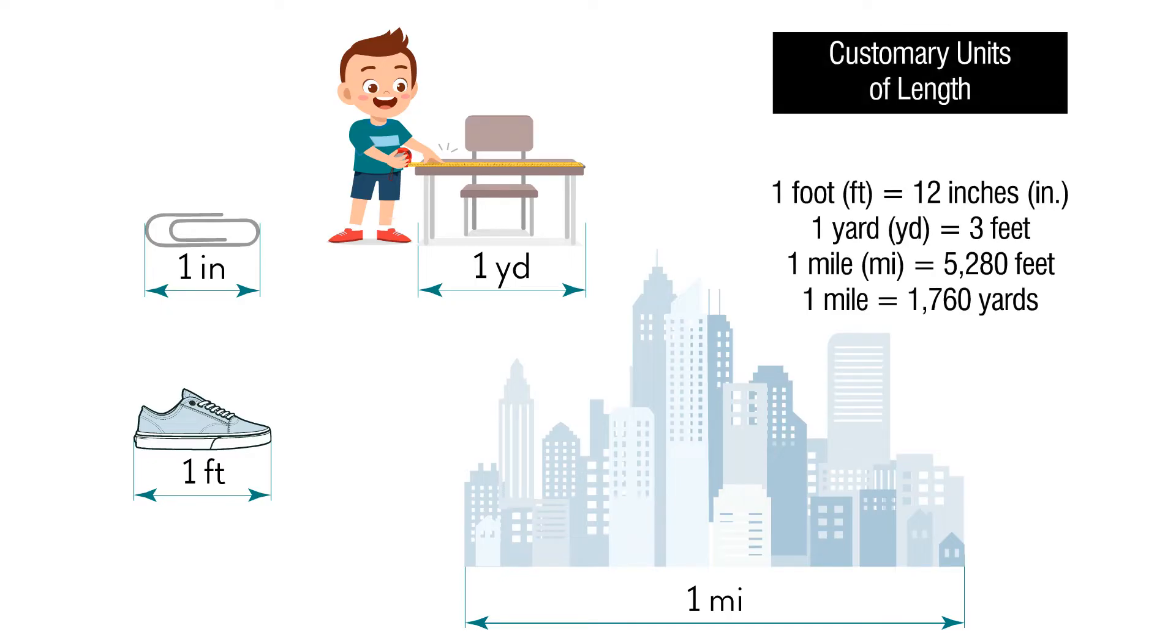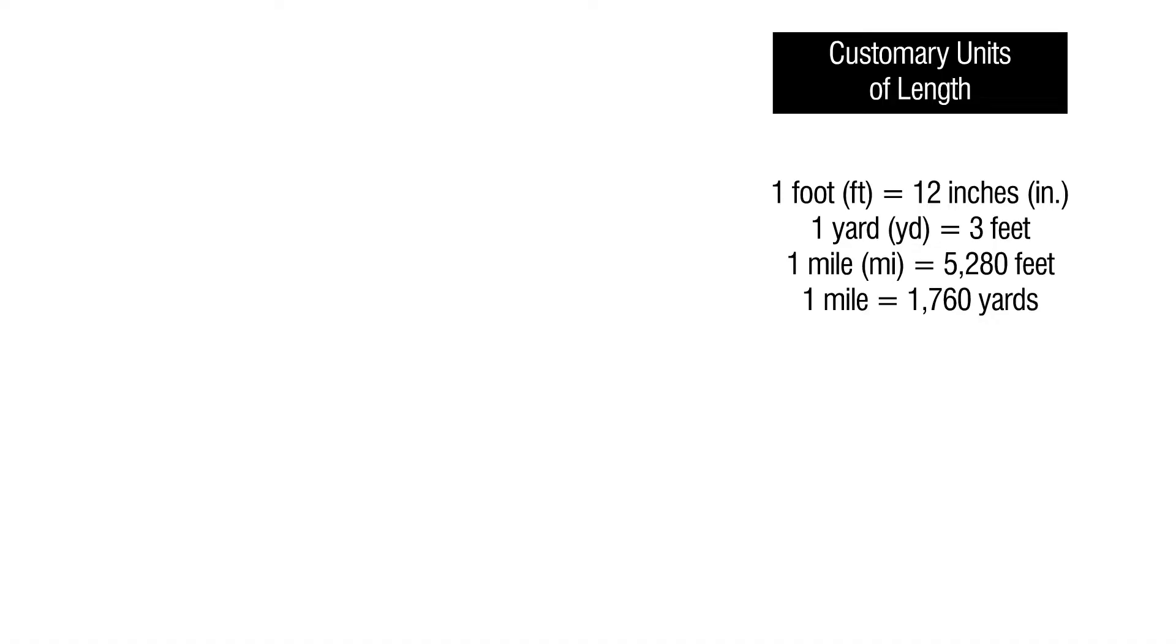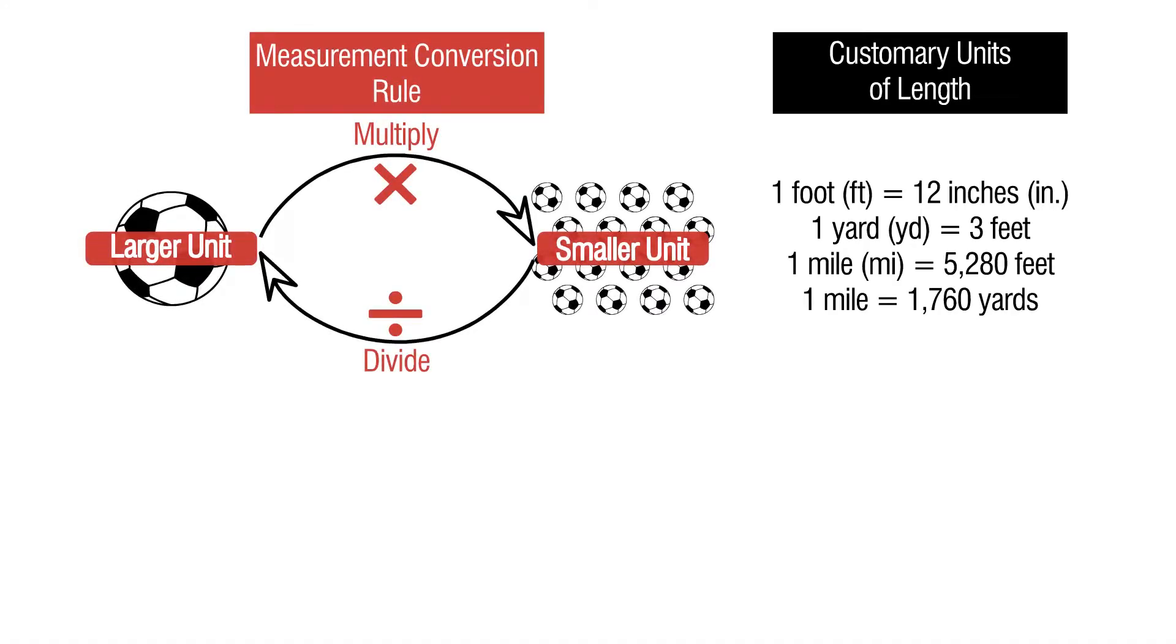This table shows the relationships between the customary units of length. For example, 1 foot equals 12 inches, and so on. We can convert one customary unit of length to another by multiplying or dividing.